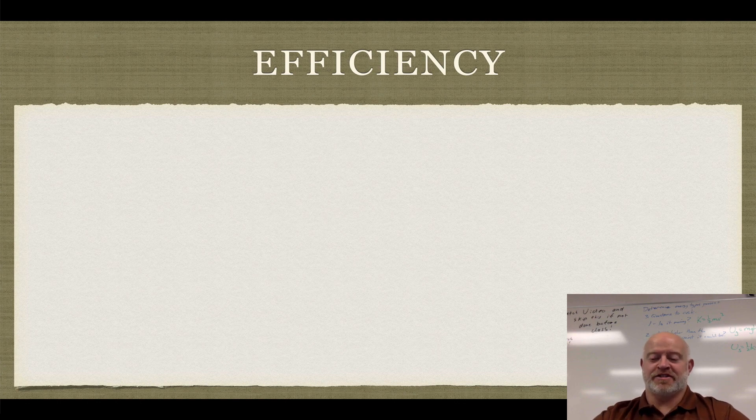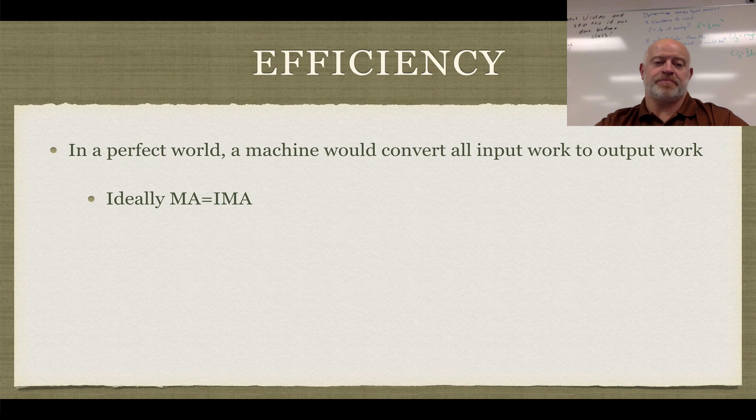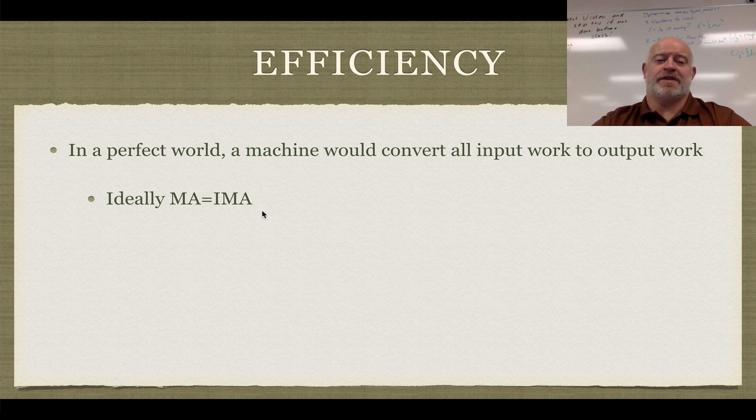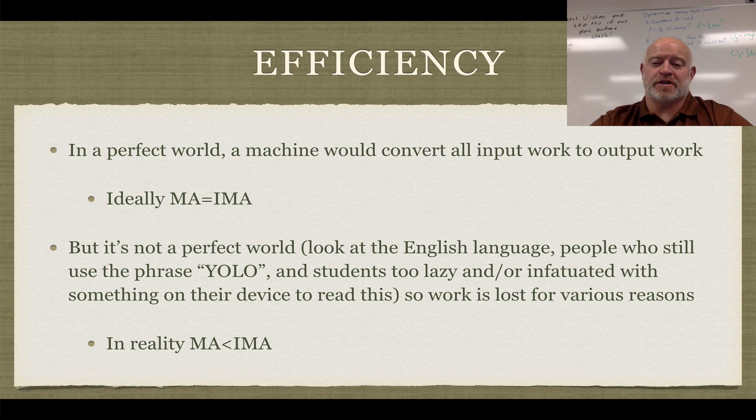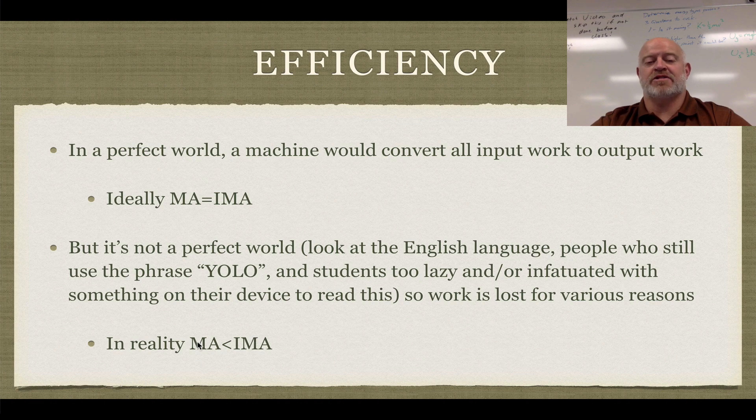So in that case, we actually can track the efficiencies of the simple machines. So in a perfect world, we'd have the mechanical advantage was equal to the IMA, but it's not a perfect world. So in reality, what happens is your mechanical advantage is always less than IMA, always.